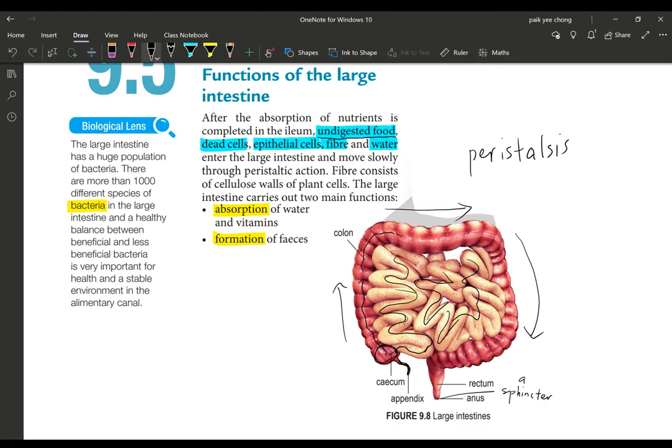The large intestines carry two main functions. Number one is absorption. A lot of water is actually absorbed as the substance is moved along this colon, and also vitamins. At the end of it all, because there is less water, the substance becomes more and more solid as it moves along the colon.